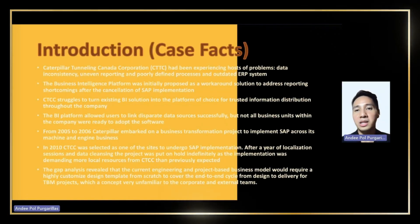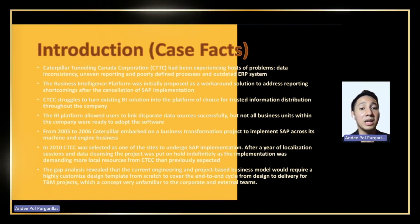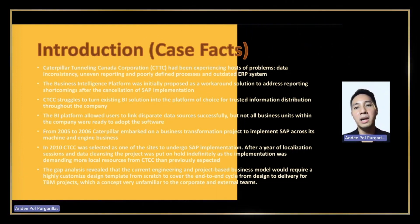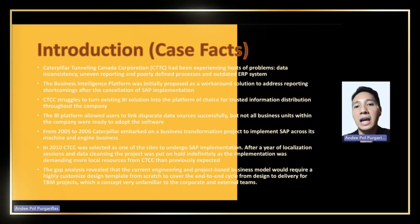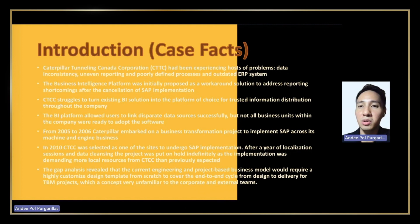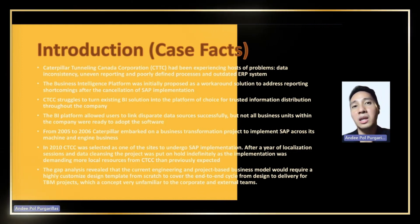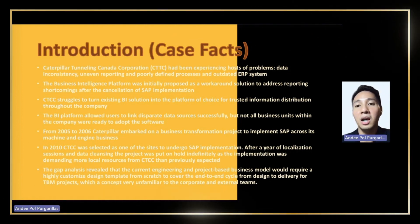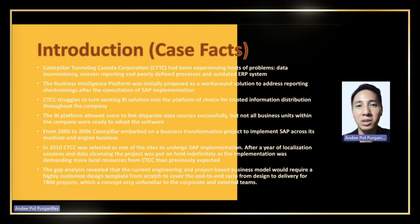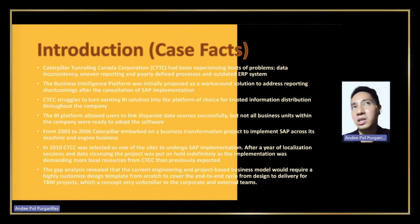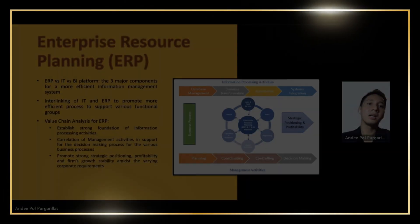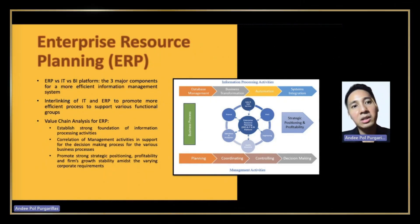Let's begin by discussing some of the case facts. The group has identified major points based on the case provided. CTCC had a host of problems in terms of data inconsistency, reporting issues, and a poorly processed and outdated ERP system. Business intelligence was provided as an interim solution to address reporting shortcomings after the postponement of the SAP implementation. However, CTCC struggled to implement the BI solution as the single source of truth, and many business units within the company were not ready to adopt the software.